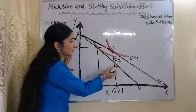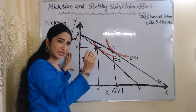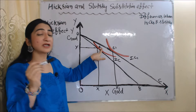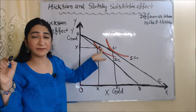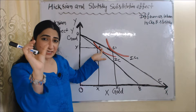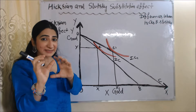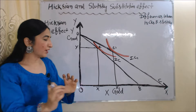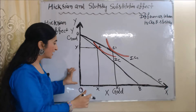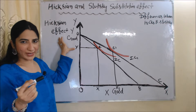AB is our initial budget line, IC is our initial indifference curve, and E is our initial consumer equilibrium point, because at this E point the budget line touches our indifference curve. At this equilibrium point, the consumer is buying OX quantities of X good and OY quantities of Y good.